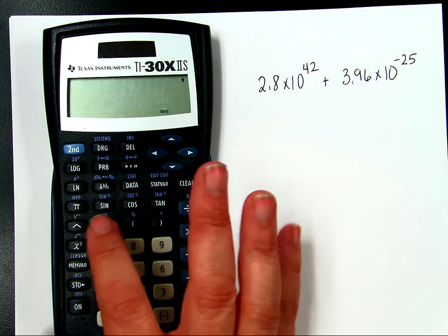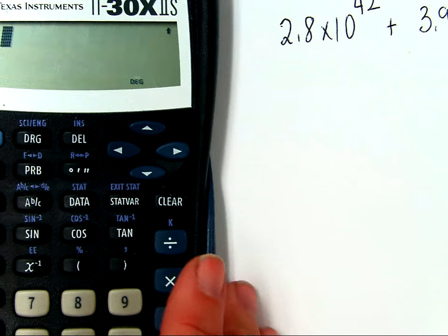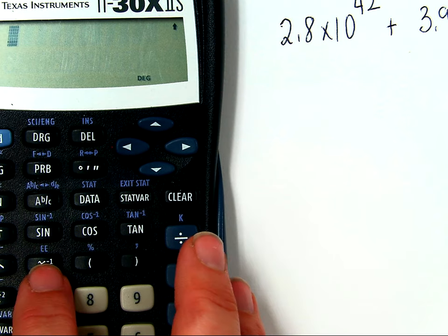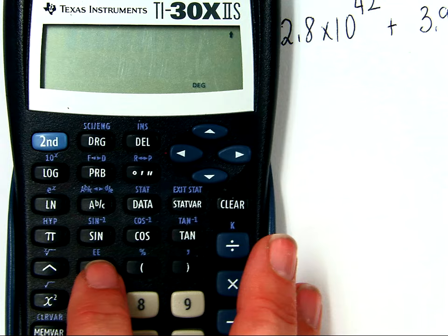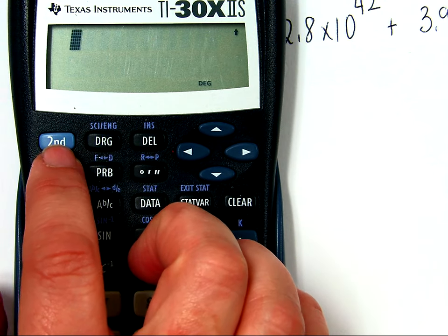In this calculator, it has what we call an enter exponent button, and it is that EE button. When I want to use that button, I have to hit that second key or the blue key.